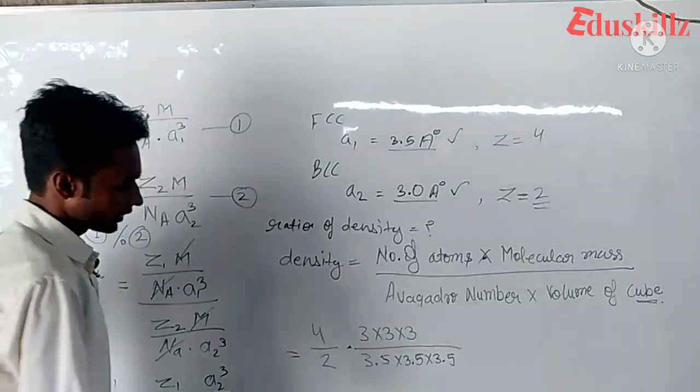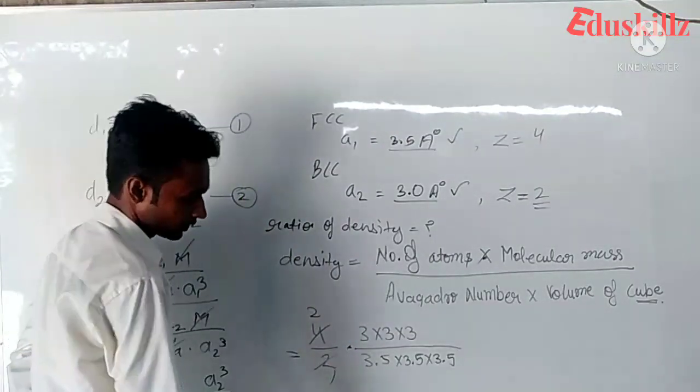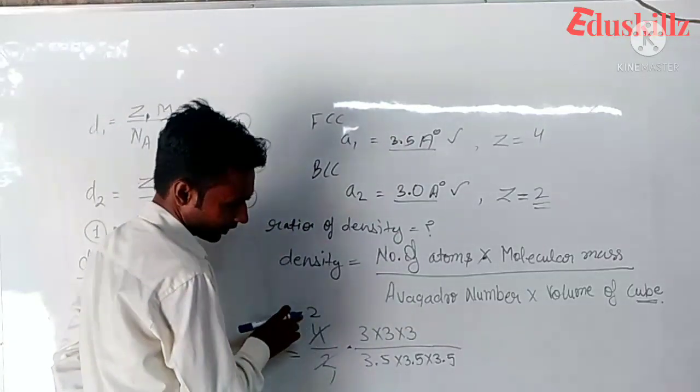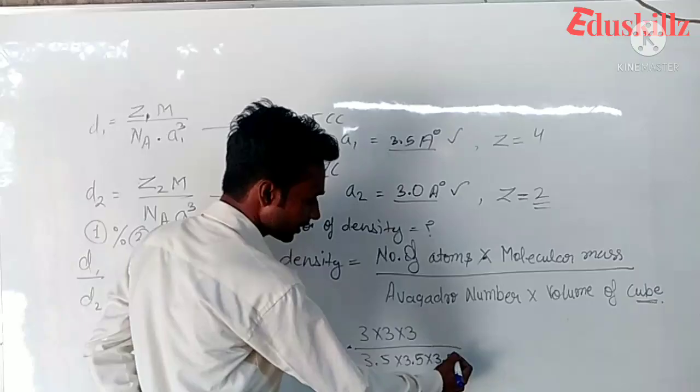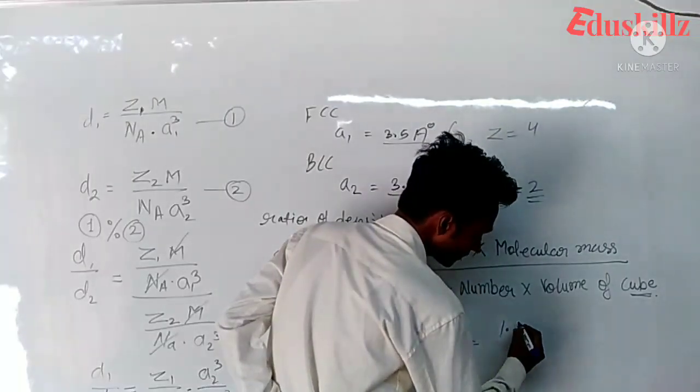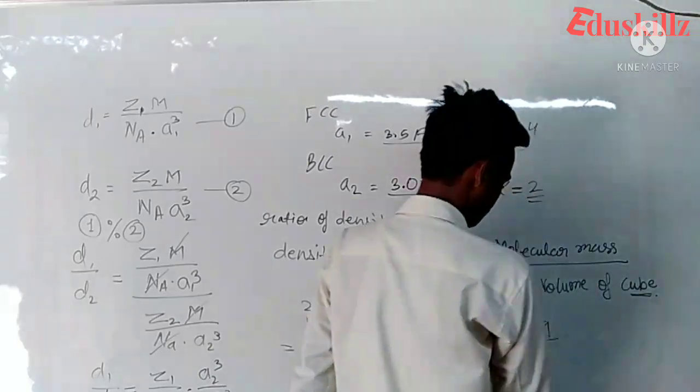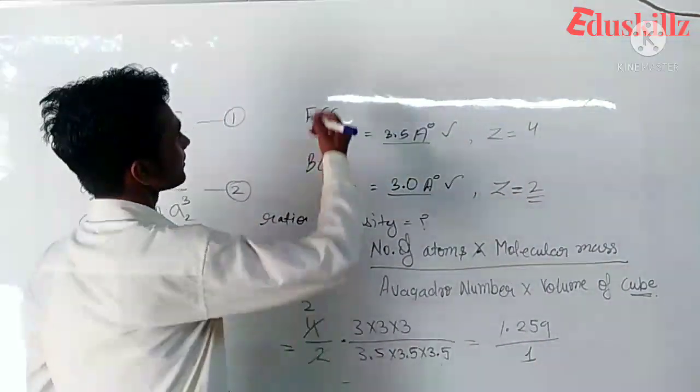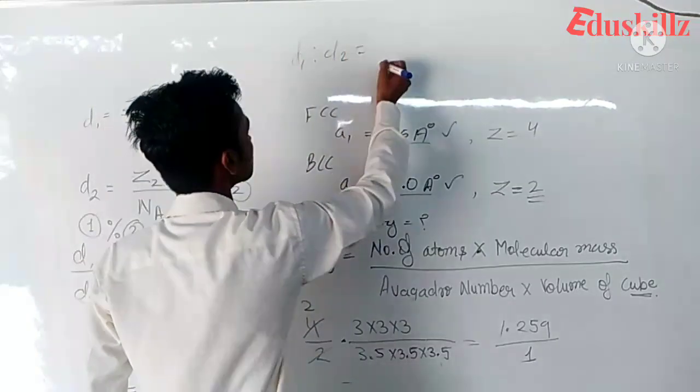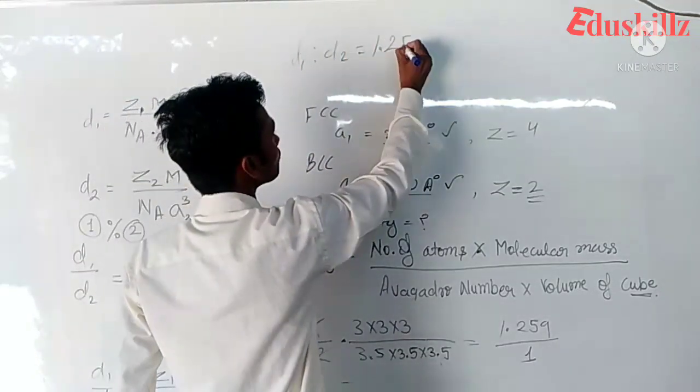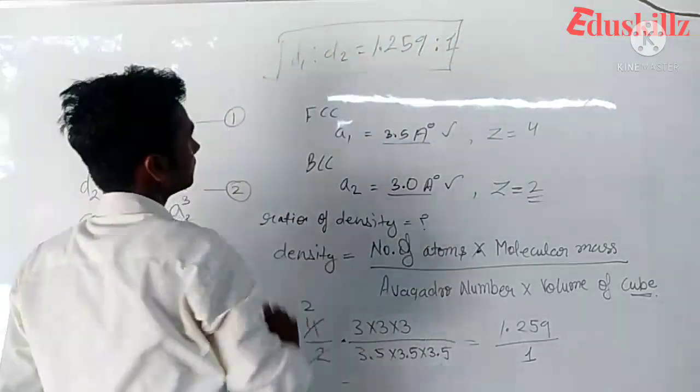Now calculate: 4 upon 2 times 3.0 cubed upon 3.5 cubed. This answer is 1.259.